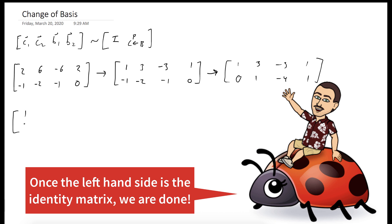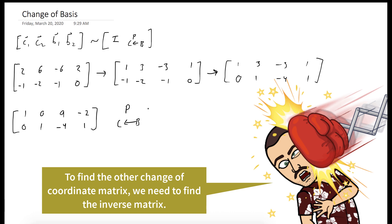And now we could use the one in the second row to eliminate the three, and we have the identity as our left two columns. So our right two columns is the change of coordinates matrix from B to C. It's [9, -4, -2, 1].